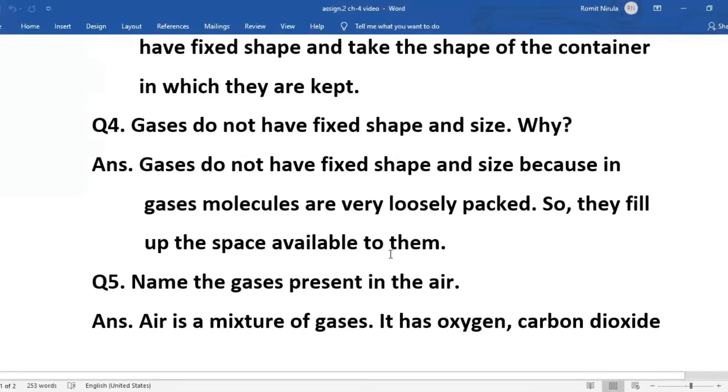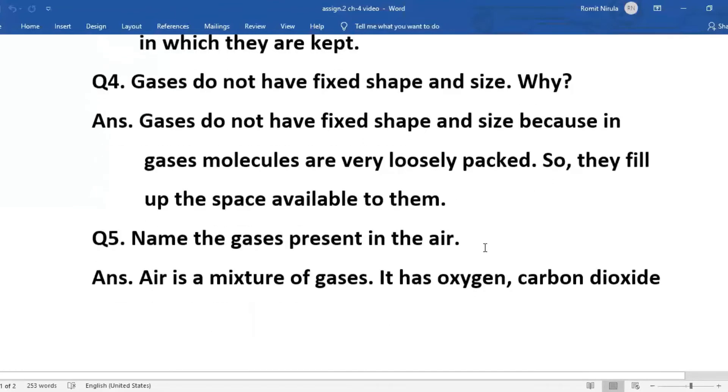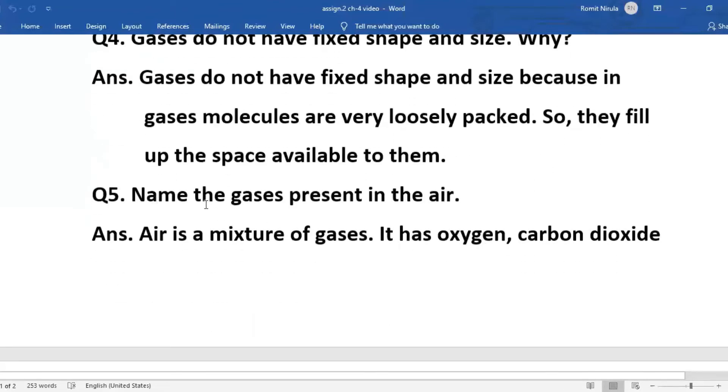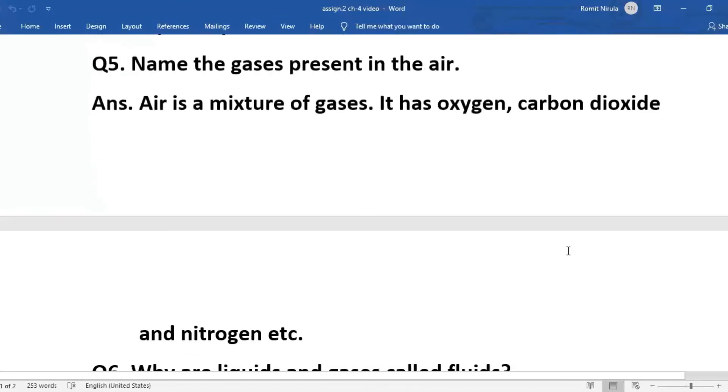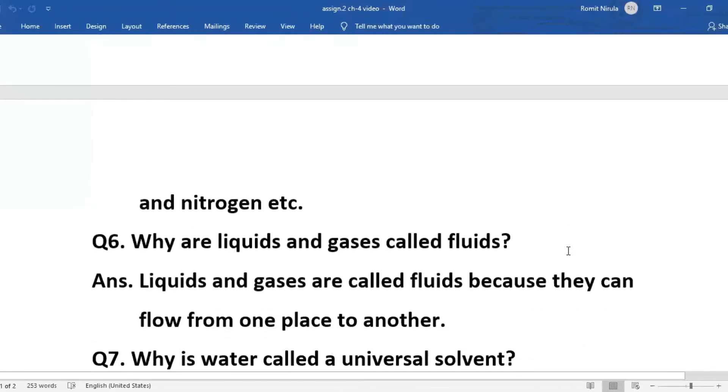Number five: Name the gases present in the air. Answer: Air is a mixture of gases. It has oxygen, carbon dioxide, and nitrogen, etc.